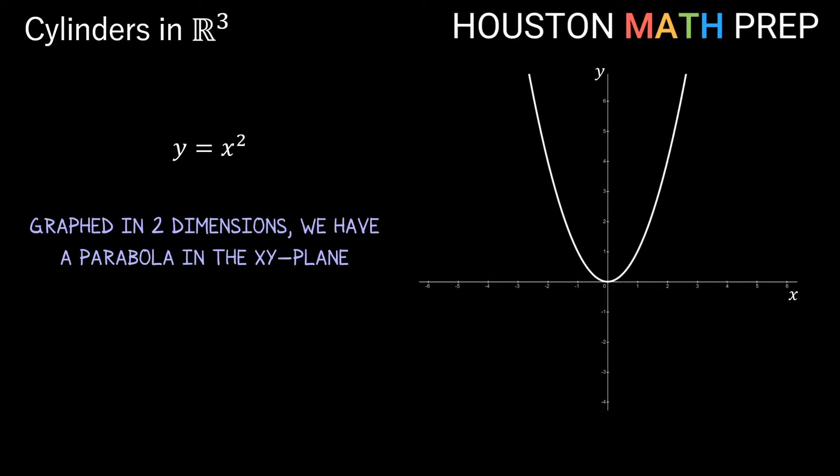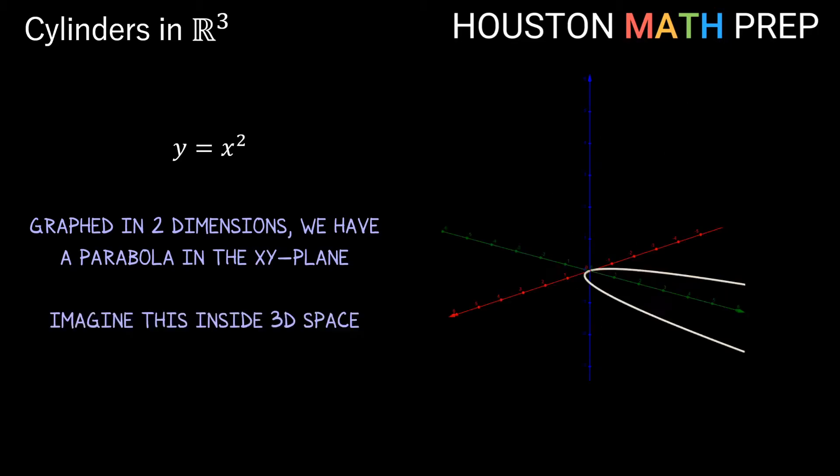Now let's think about taking this 2D graph of our parabola in the xy plane and imagine this inside three-dimensional space. I still have my parabola in the xy plane. Now this path here in 3D space is not the graph of y = x² anymore. When we consider y = x² in 3D space, notice in the equation that z is not specified here.